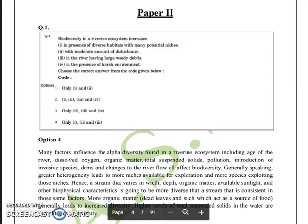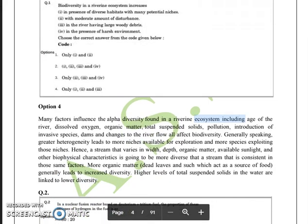Then we have in the river having the large woody debris. Whenever you have a large woody debris in the river you are supposed to have more biodiversities. Many factors influence the alpha diversity found in the riverine ecosystem including age of the river, dissolved oxygen, organic matter, total suspended solids, pollution, introduction of invasive species, dams and change of the river flow which are all affected by biodiversity. Generally speaking, greater heterogeneity leads to more niches available for exploitation. That's why option 4 is the correct option.